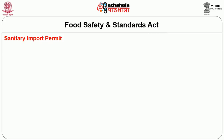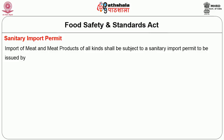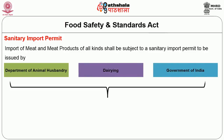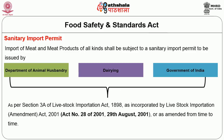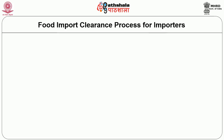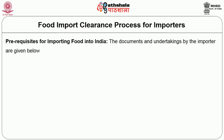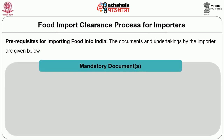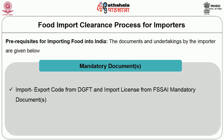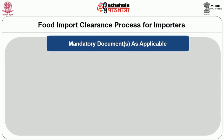All consignments of edible products imported in consumer packs shall carry a declaration on the label that the product does not contain beef in any form. Coming to the sanitary import permit — import of meat and meat products of all kinds shall be subject to the sanitary import permit, issued by the Department of Animal Husbandry and Dairying, Government of India, as per Section 3A of the Livestock Importation Act 1898 as amended in 2001. For the food import clearance process, the mandatory documents are the Import-Export Code (IEC) obtained from the Director General of Foreign Trade, the import license from FSSAI, and Country of Origin Certificates.